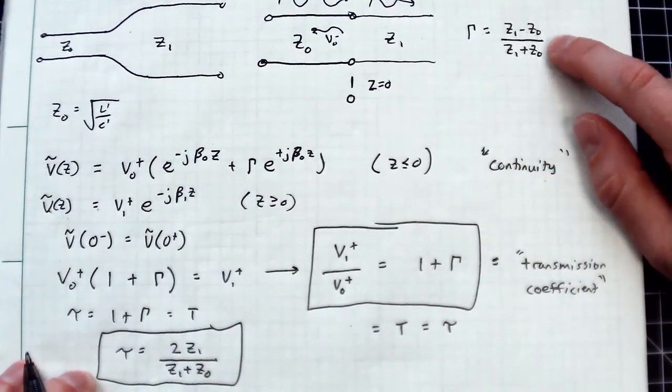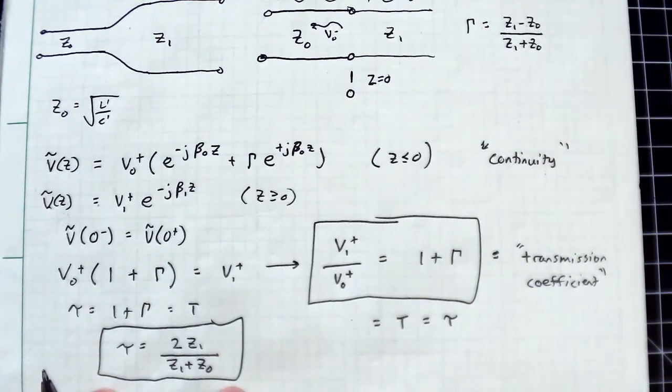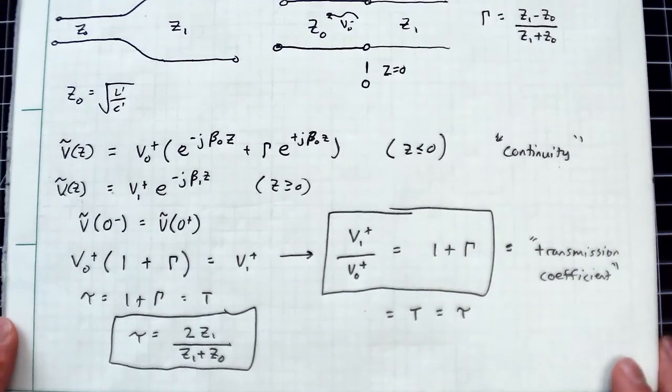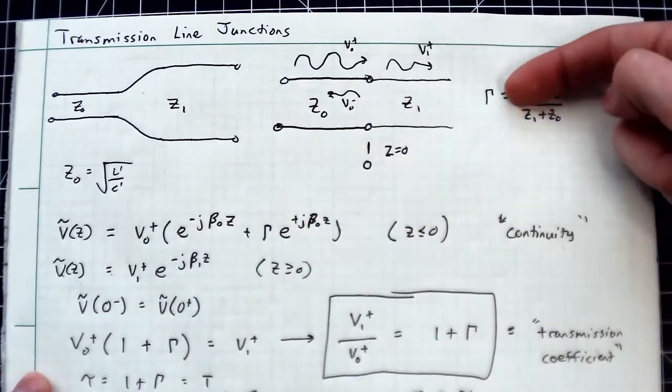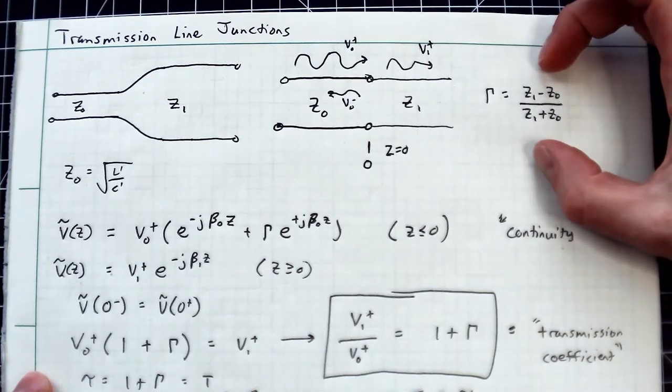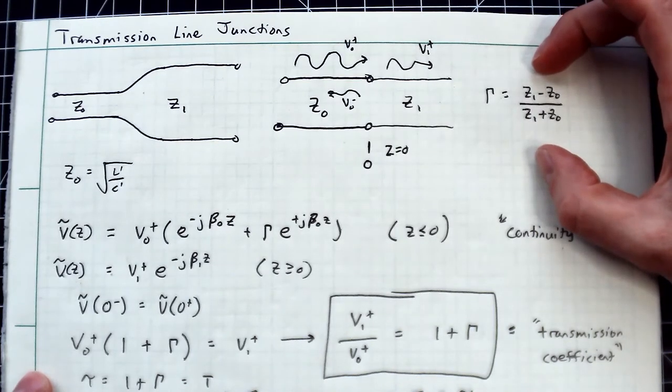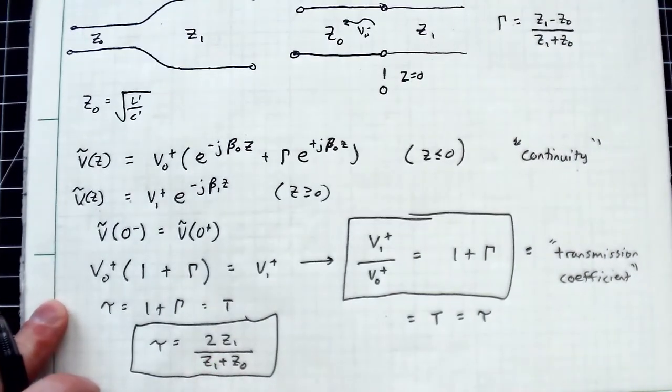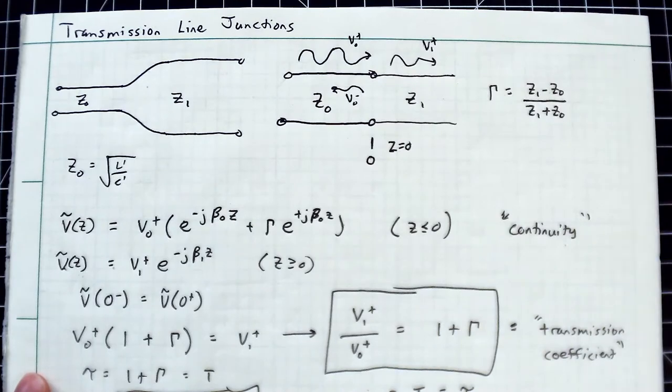This is one of those equations you should remember and have memorized, because it's going to come up a lot. That's essentially all that happens at the junction between two transmission lines - you get a reflection and a transmission. The reflection coefficient follows the exact same form as before, and you get this transmission coefficient. Remember, this is a special case where this is supposedly going on forever.